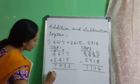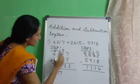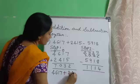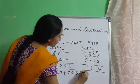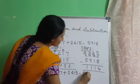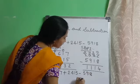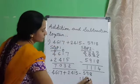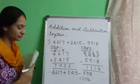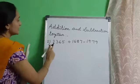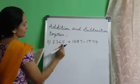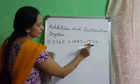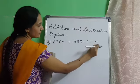So the final answer is: 4617 plus 2415 minus 5918 is equal to 1114. The next problem is 2365 plus 1687 minus 1979.